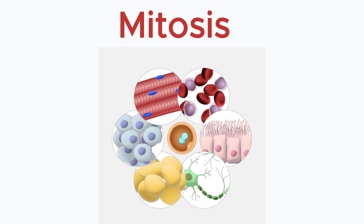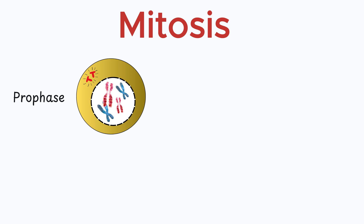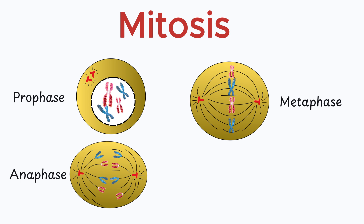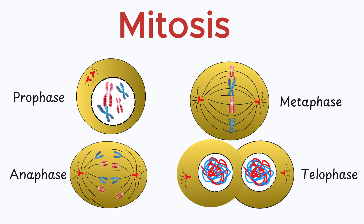Mitosis occurs in somatic cells and has four stages: prophase, metaphase, anaphase, and telophase.